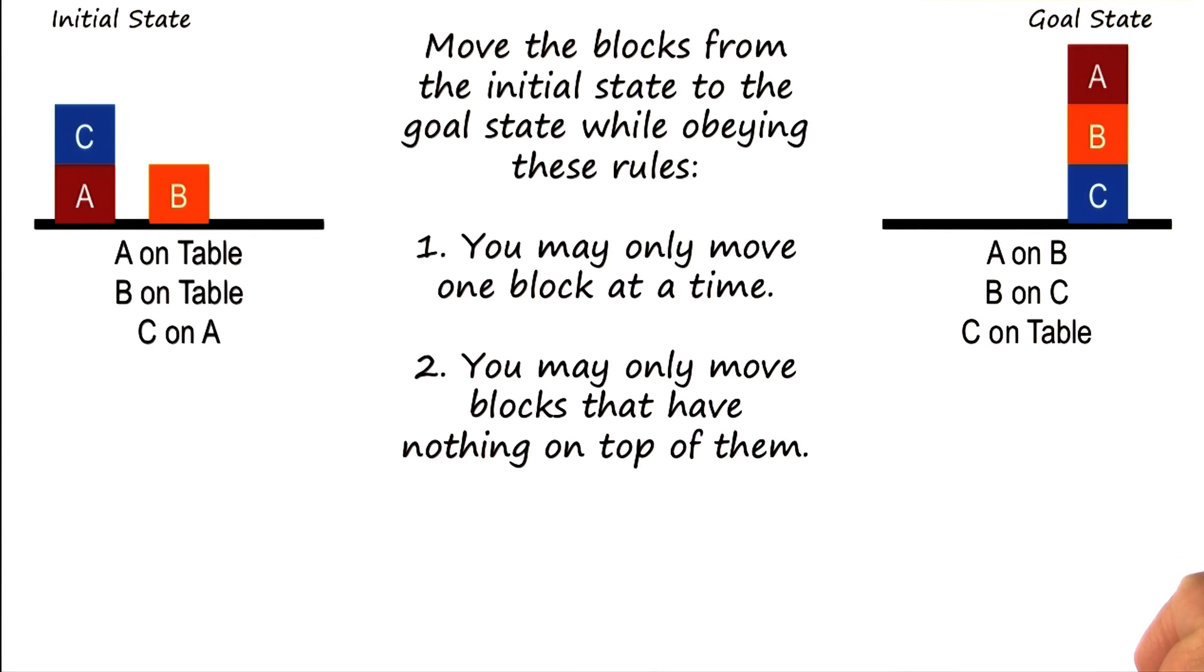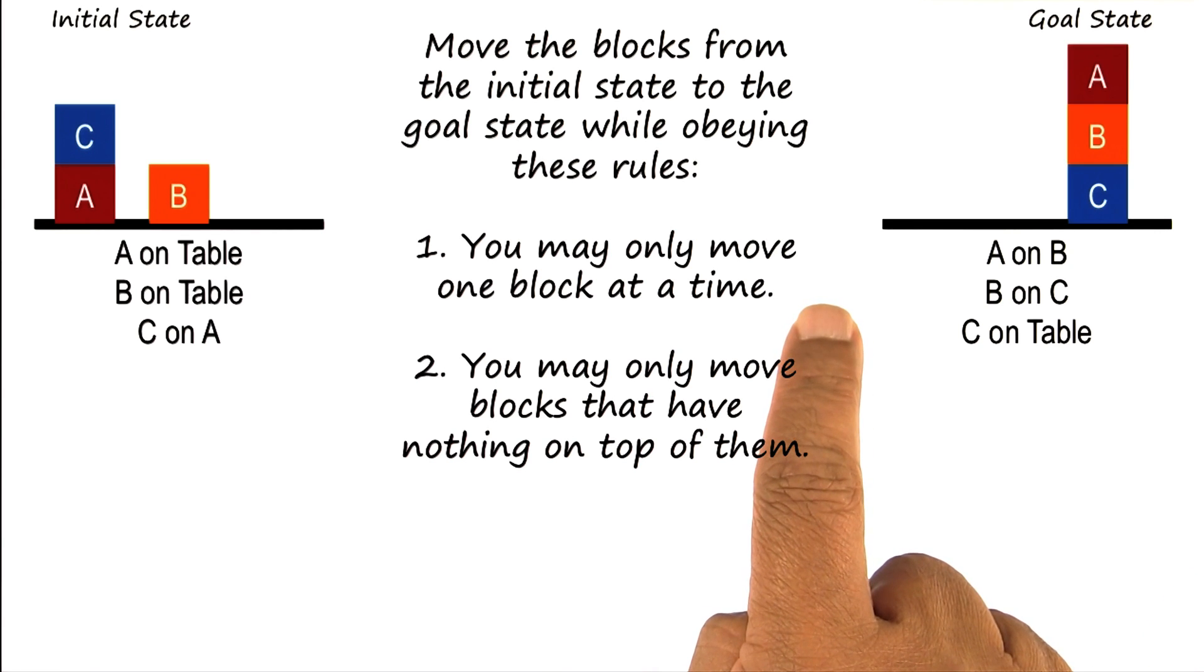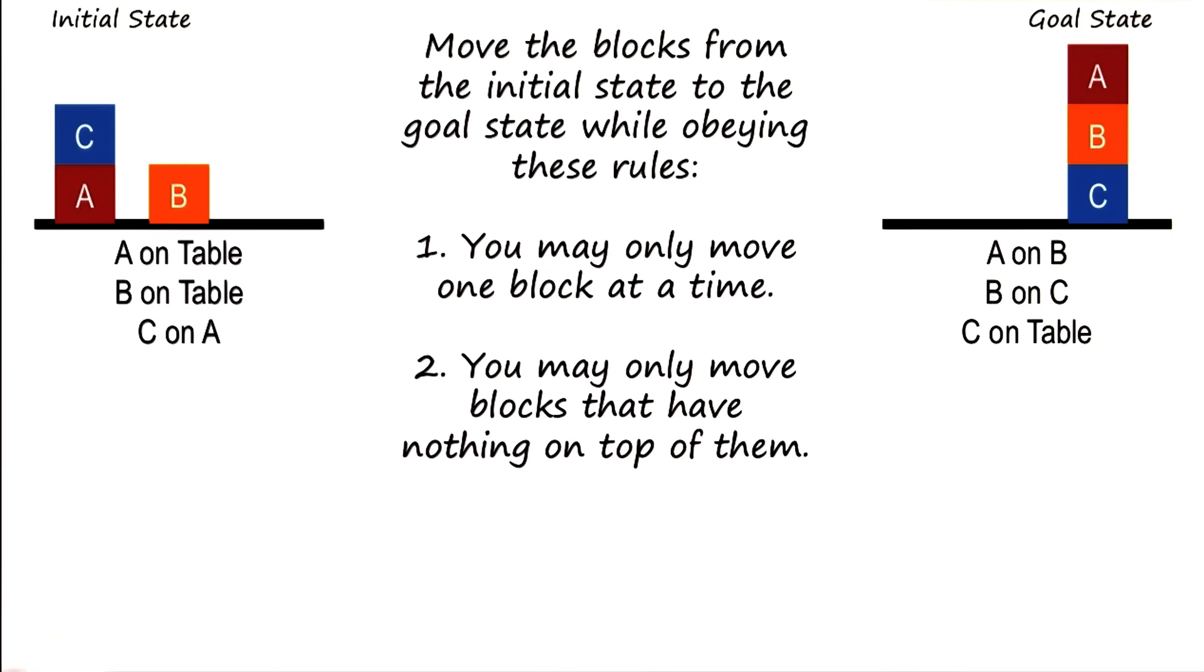Let's introduce a couple of constraints. You may move only one block at a time, so you can't pick both A and B together. And second, you may only move a block that has nothing on top of it. So you cannot move block A in this configuration because it has C on top of it.